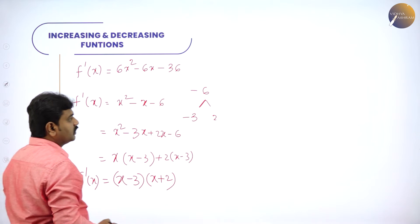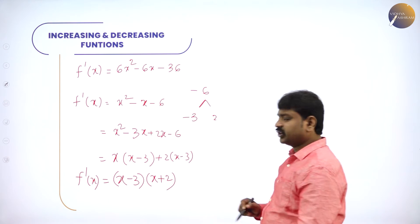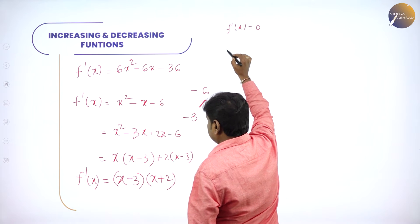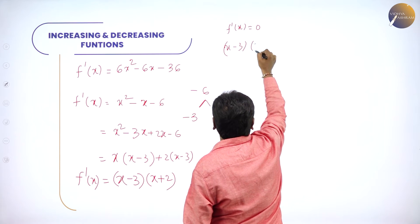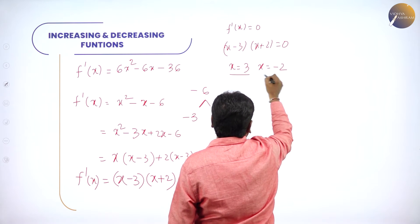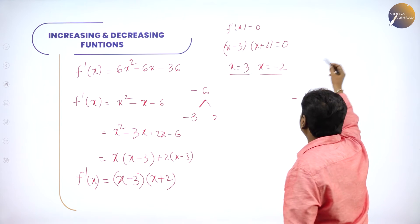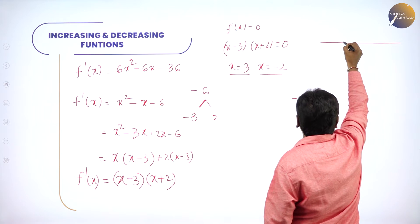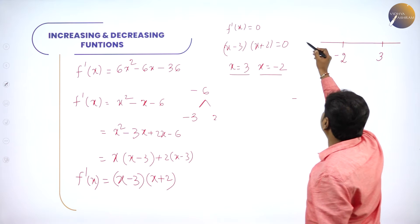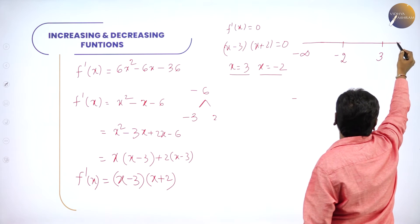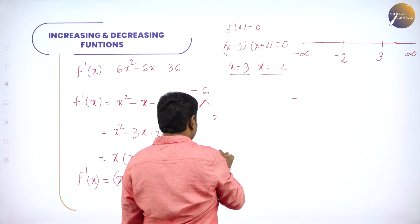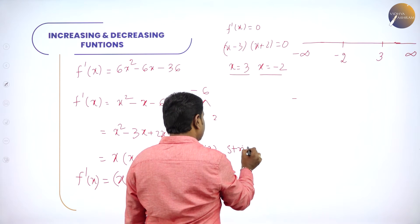So f'(x) = 6(x − 3)(x + 2). Equate to zero: (x − 3)(x + 2) = 0, giving roots x = 3 and x = −2. Write the roots on the number line: −2 on the left, +3 on the right, with −∞ on the far left and +∞ on the far right. Now we solve for the two cases: strictly increasing and strictly decreasing.